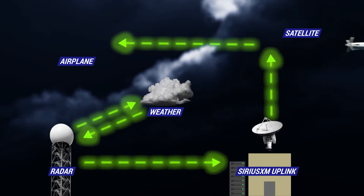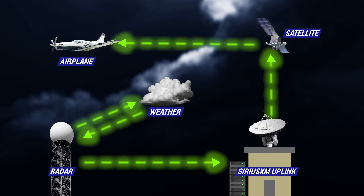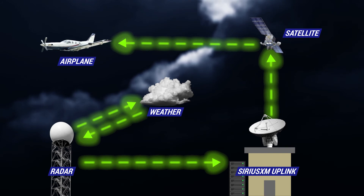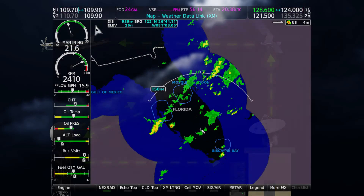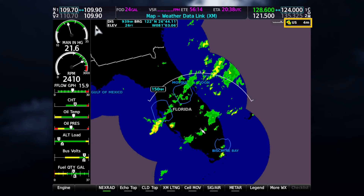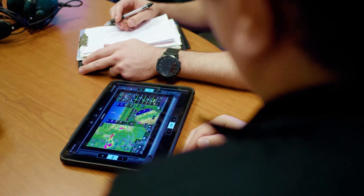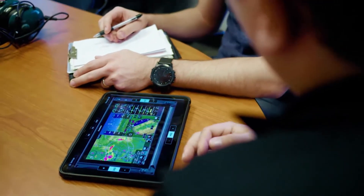Please keep in mind that NEXRAD data is not real-time weather information, and what you see out of your cockpit may differ from what's showing on your screen. The elapsed time between collection, processing, and dissemination of NEXRAD images can be significant, and the data you see may not reflect the current location of cells. NEXRAD information can be as much as 15 minutes old by the time it gets to you. Because of this, NEXRAD should be used as a strategic planning tool to avoid areas with strong returns showing.